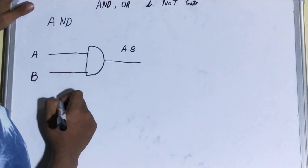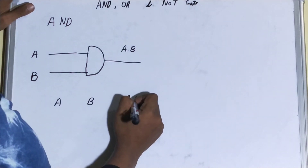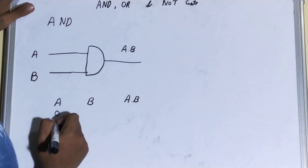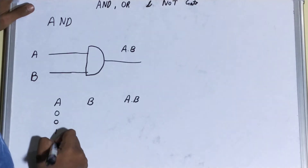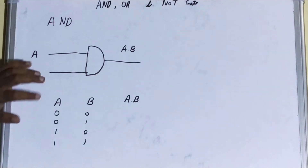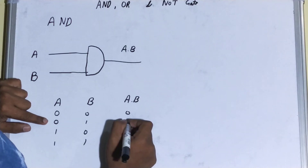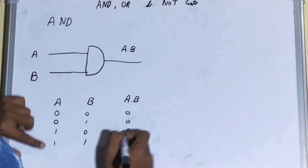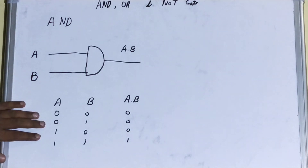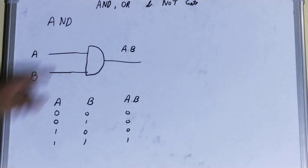Now let's see the truth table for the AND gate quickly. For inputs A, B, and output A dot B: zero-zero gives zero, zero-one gives zero, one-zero gives zero, and one-one gives one. So this is your truth table for the AND gate.